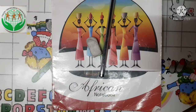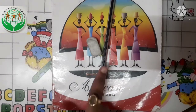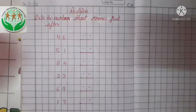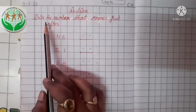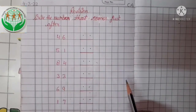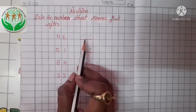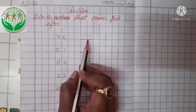Kids, this is your math class, and today we will do our math work in the math notebook. So take out your math notebook, your pencil and your eraser, and open it. Today we will do revision work of 'write the number that comes just after.' You have to recognize the numbers and write down the number that comes just after.